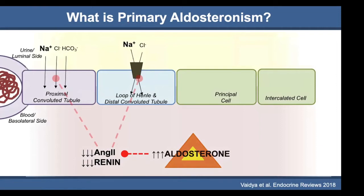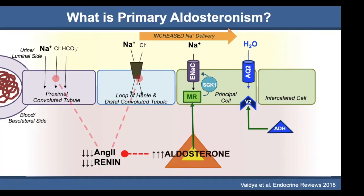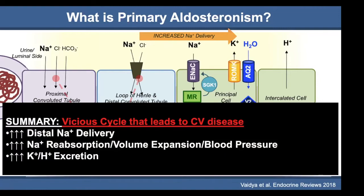In primary aldosteronism, since angiotensin 2 is relatively suppressed, proximal sodium reabsorption is diminished and more sodium is delivered to the distal nephron. There, excess aldosterone interacts with the mineralocorticoid receptor in the principal cell to induce ENAC-mediated sodium reabsorption, causing volume expansion. For every sodium reabsorbed, a cation — either potassium or a proton — must be excreted. This sets up a vicious cycle: increased distal sodium delivery leads to more sodium reabsorption, volume expansion, higher blood pressure, increased glomerular filtration, and further increases in potassium and hydrogen ion excretion.